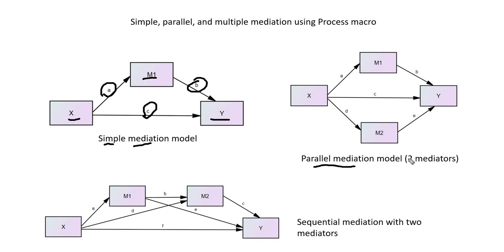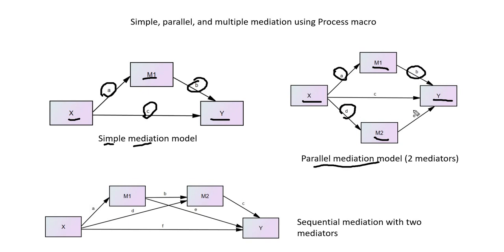The indirect effect in this model, which is used to test for mediation, is calculated as the product of paths A and B. The second model is a parallel mediation model where the effect of X on Y is mediated by two variables, M1 and M2. The indirect effect of X on Y via M1 is the product of paths A and B, and the indirect effect via M2 is the product of paths D and E, with C being the remaining direct effect.